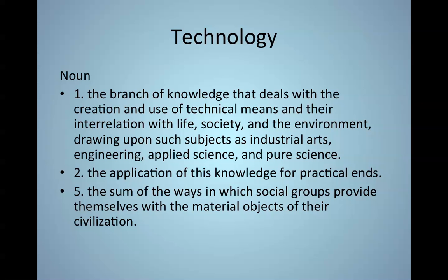The final definition here: the sum of the ways in which social groups provide themselves with the material objects of their civilization. The sum of the ways in which social groups, maybe a family, maybe a community, maybe a whole nation, provide themselves with the material objects of their civilization. Material objects that can be bricks to make a house, material objects that can be automobiles, material objects that can be the food that can get us back to that cup of coffee. So technology, the branch of knowledge that deals with the creation and use of technical means and the interrelation with life, society, and the environment.